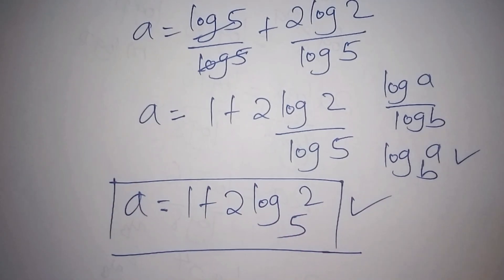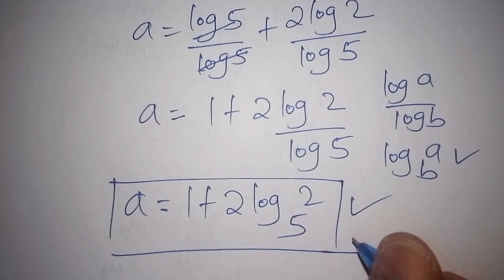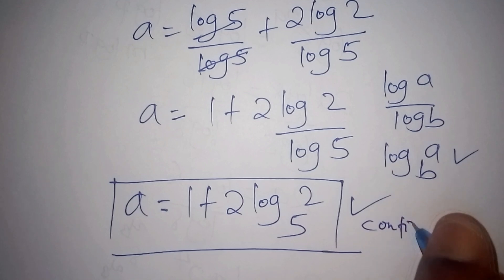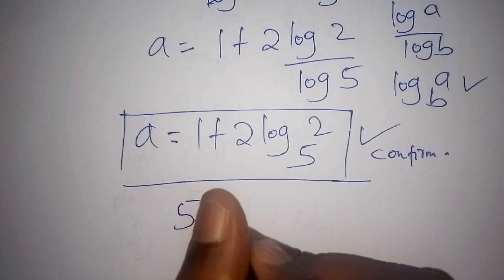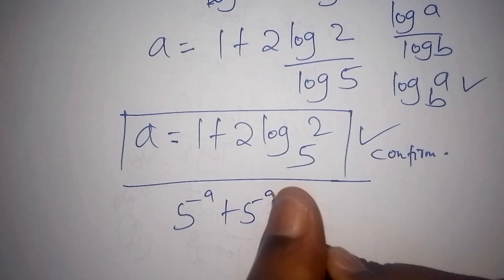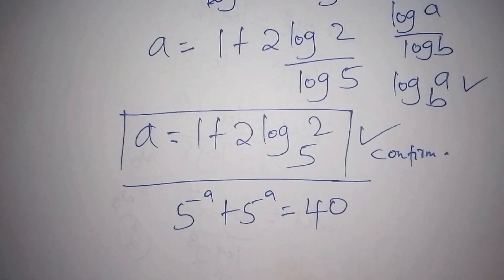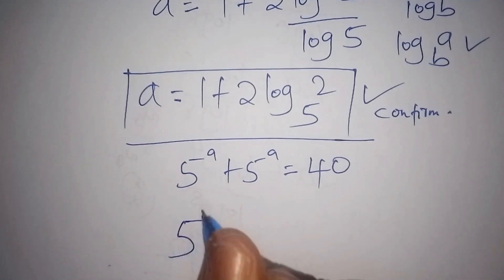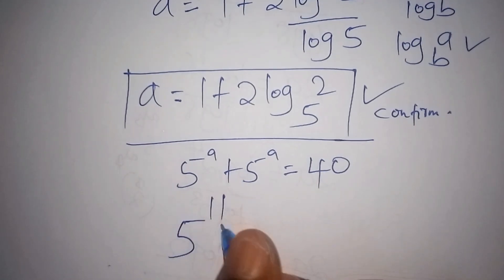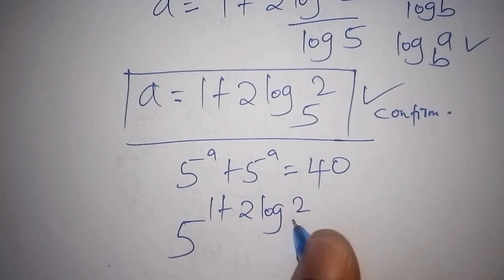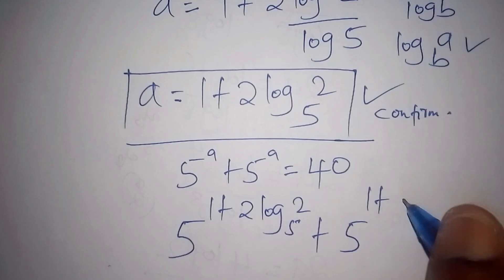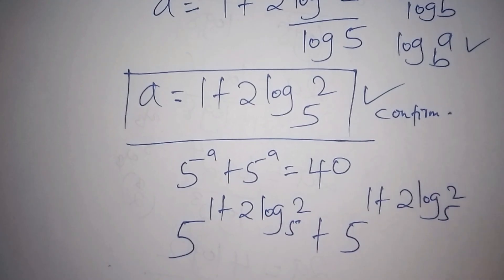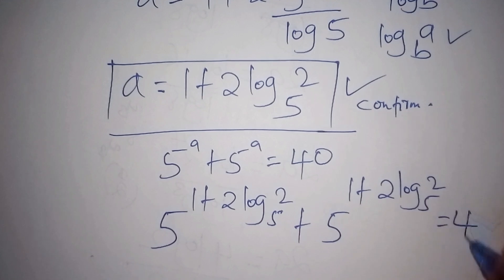If you have enjoyed how we worked out this math problem, you can subscribe to our channel. Let us now confirm if our answer is correct. We had 5 to the power of A plus 5 to the power of A equals 40, and substituting A = 1 plus 2·log of 2 to the base of 5, this should give us 40.